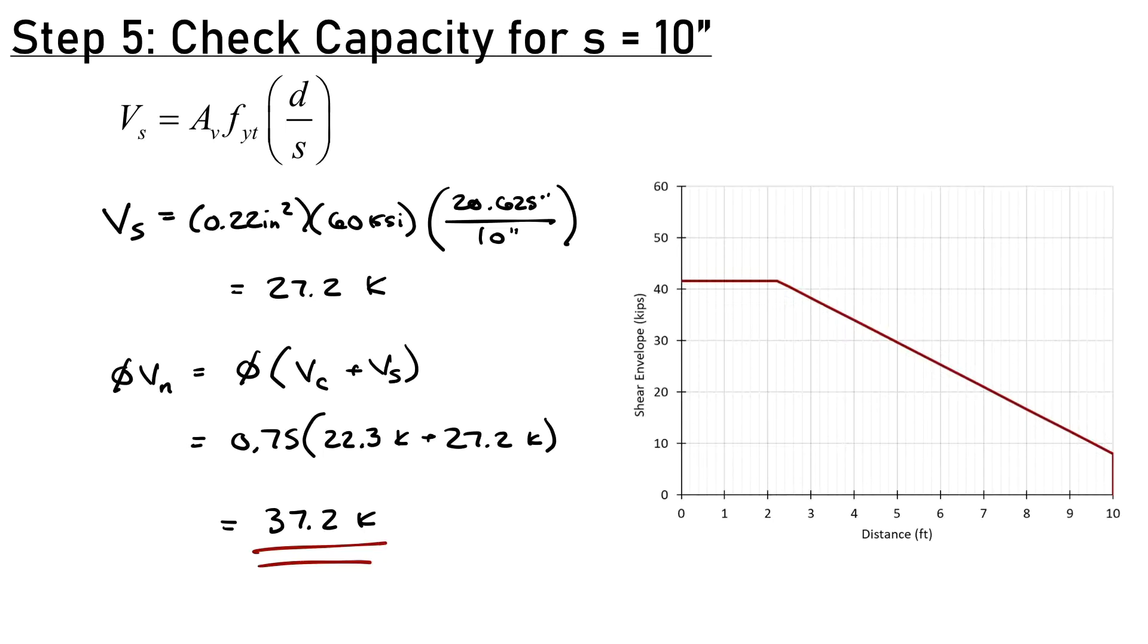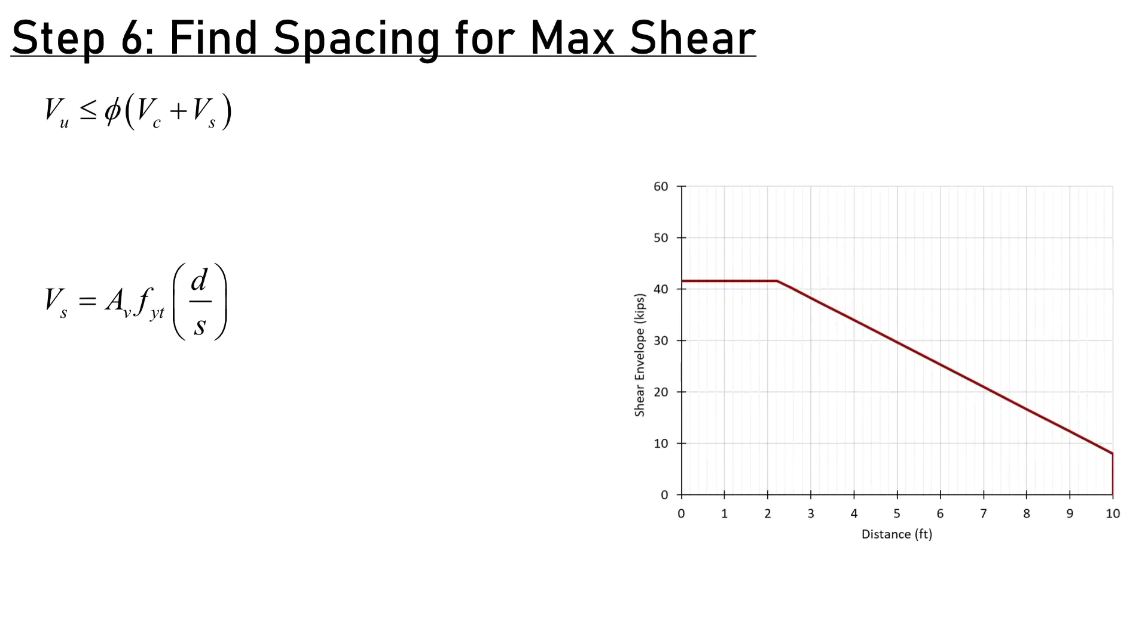I can plot that on my diagram and see it works for a good portion of my beam, but not all. On the right, my 10-inch spacing satisfies requirements, but in those first three and a quarter feet, I need more stirrups. To find how many stirrups I need, I'll flip the capacity equation to solve for VS. VS has to be greater than or equal to VU divided by phi minus VC. My demand is 41.6 kips divided by 0.75, minus 22.3 kips, equals 33.2 kips. My steel has to provide at least 33.2 kips.